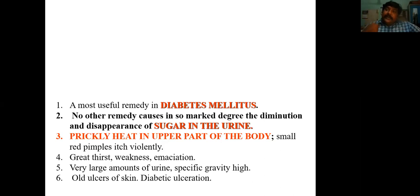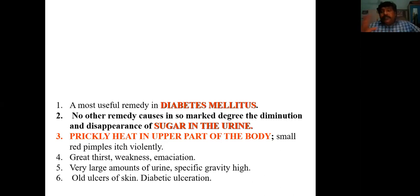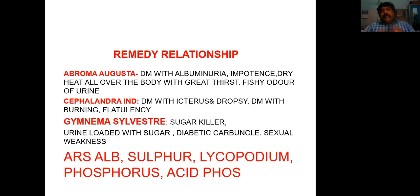In those conditions, we get good results. Even though we may be giving a constitutional drug such as Arsenic album or Lycopodium, if the patient is having a diabetic ulcer, by dressing with Syzygium and internally giving Syzygium tincture, we can bring down sugar levels and also prevent slough formation. So remember: Syzygium for diabetes mellitus, especially with prickly heat in the upper part of the body, along with great thirst, emaciation, and diabetic ulcerations.